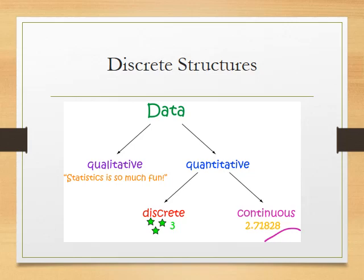Discrete values are like 1, 2, 3, 4, 5 — these are all discrete. But continuous values go up to a decimal point, like the value of pi — an exponential value such as 3.14159265... which goes on indefinitely. That kind of value is continuous. A specific particular value is discrete, while an ongoing varying value is continuous.